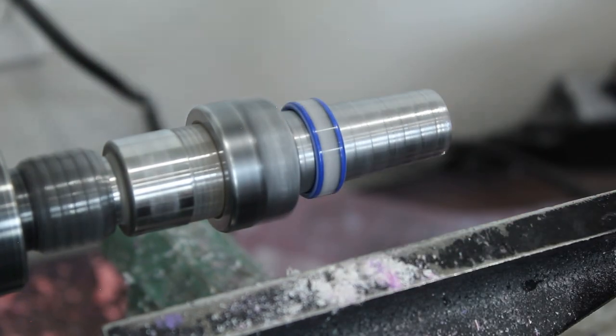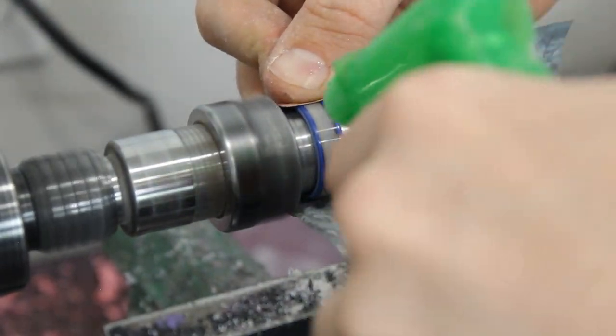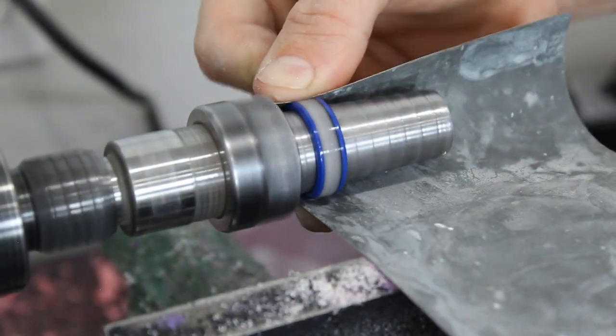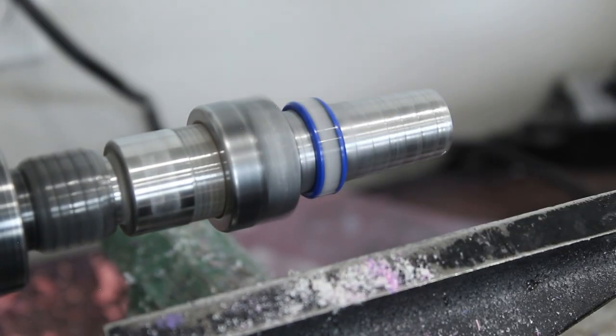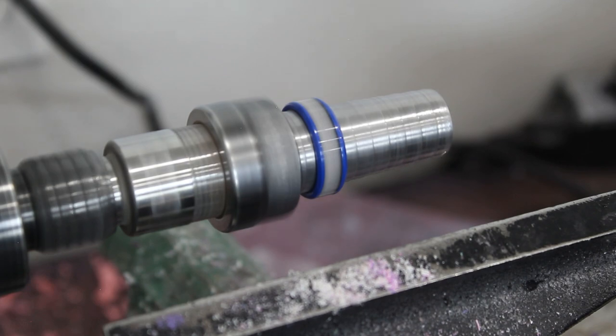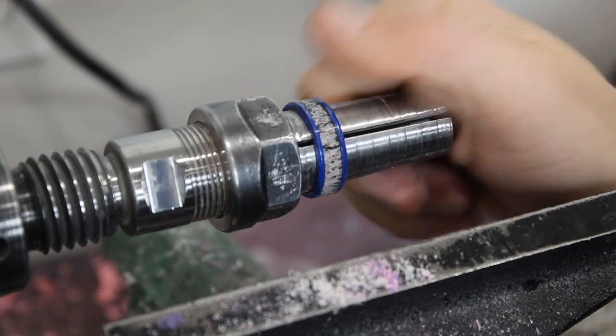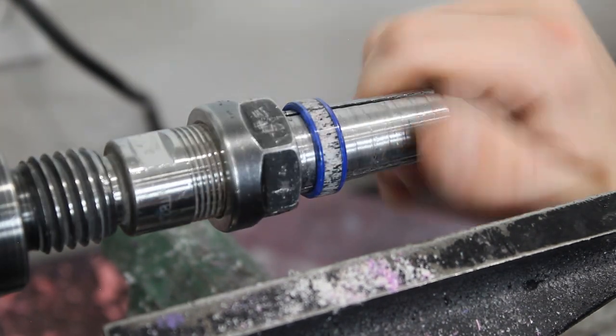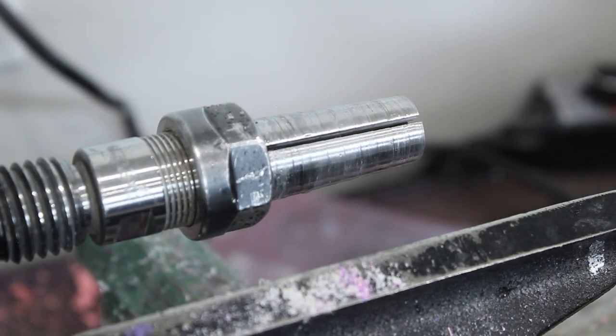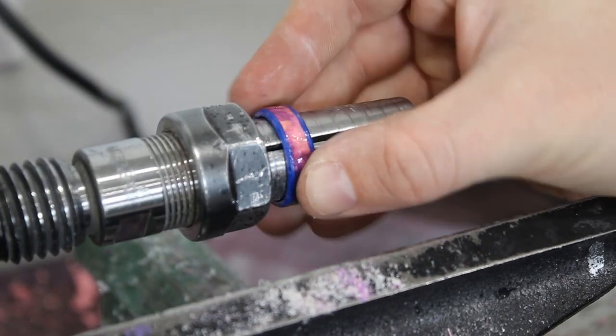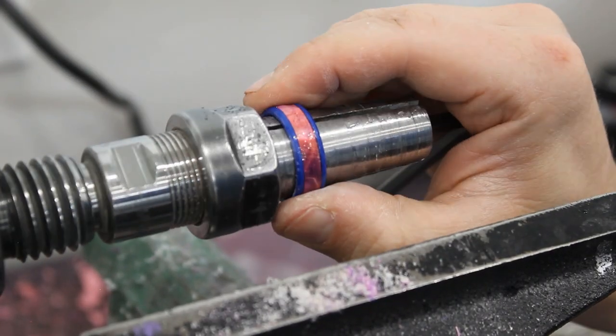This is an 800 grit and then this is a 1500 grit. 1500 grit is the highest I will go with CA glue. I don't need to go any higher because the polish will take care of the rest of the micro scratches. The polish we're using is just a Zam polish, which we have on our website as well. It's just a wax polish stick.